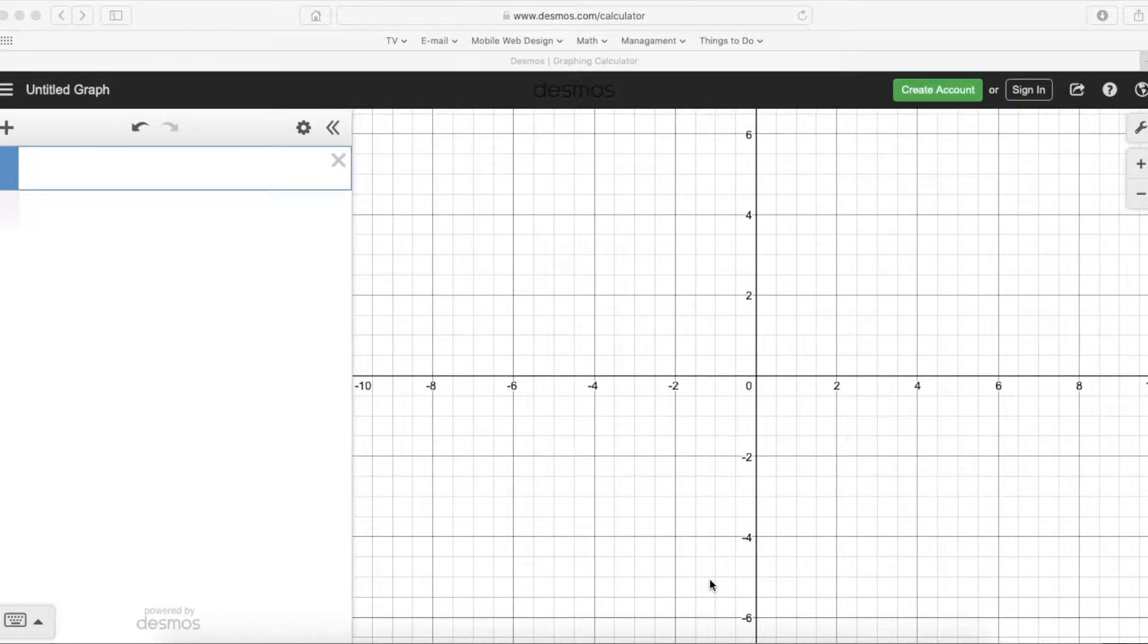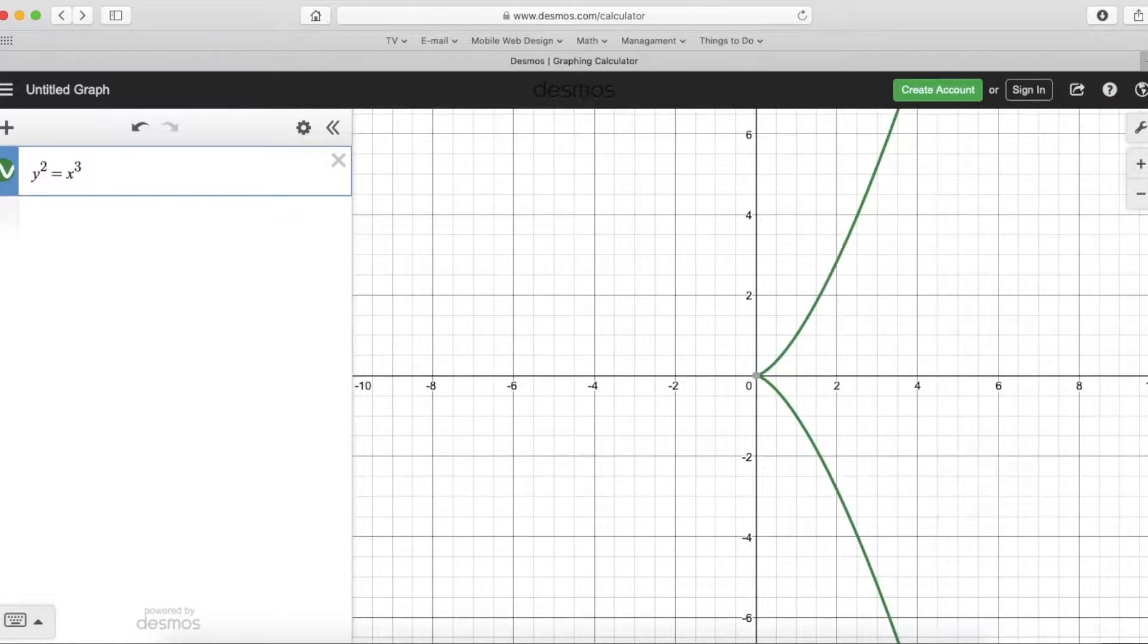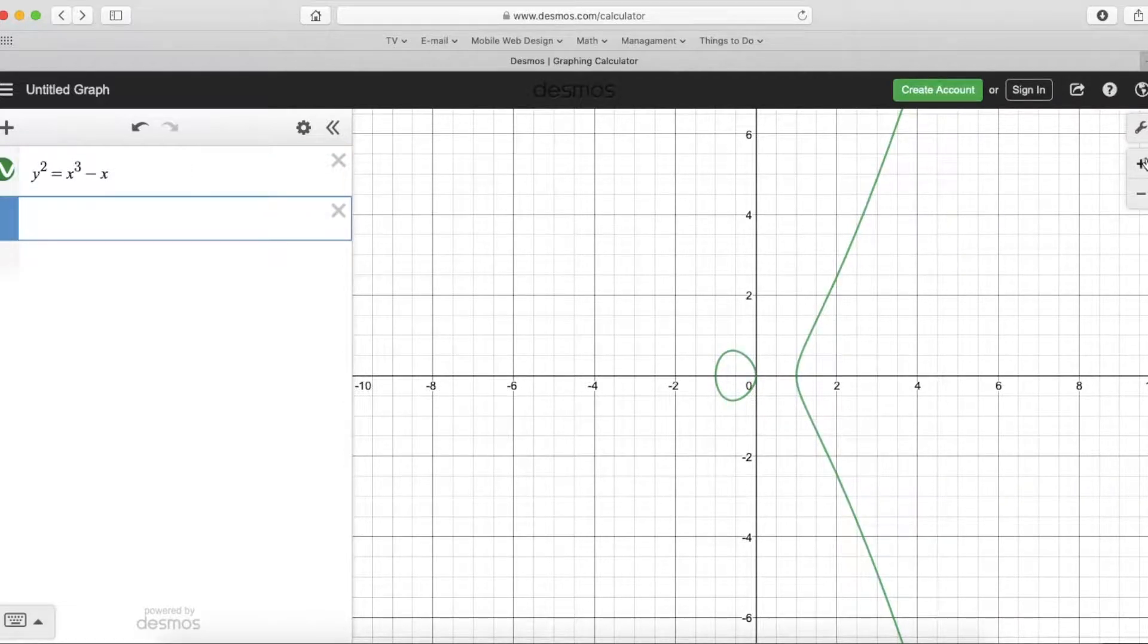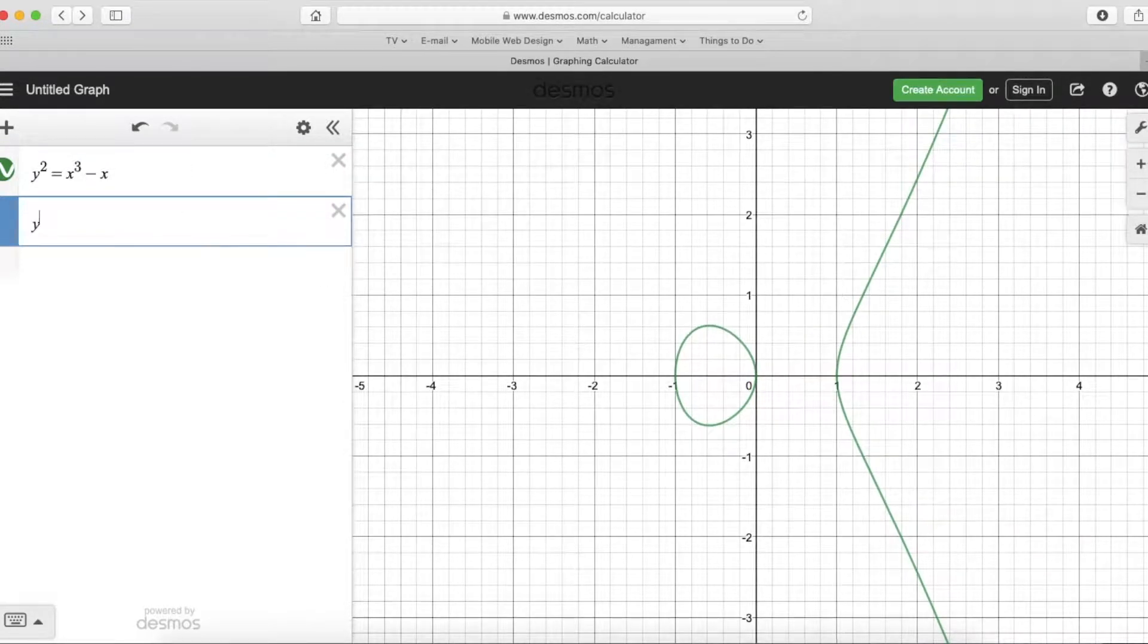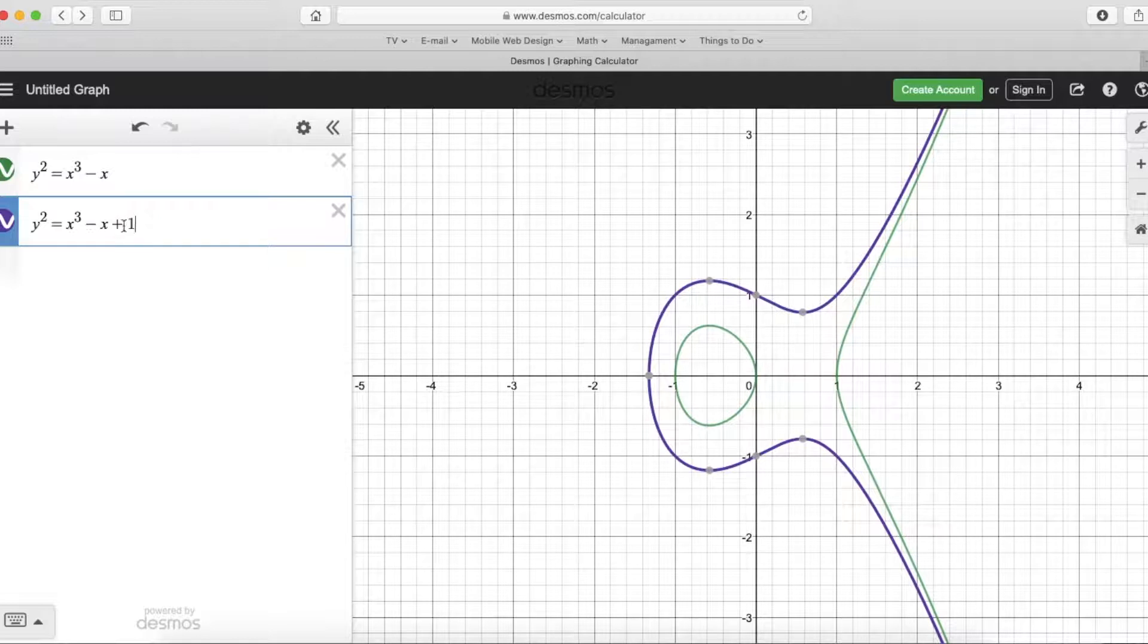I thought it would be interesting here just to play with the graph a little bit so you can see what's going on. So let me just type in y² = x³ - x. That's one. And y² = x³ - x + 1, and it looks the other way. So you can see just by adding one to this, it changes it from positive to negative.